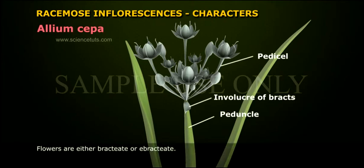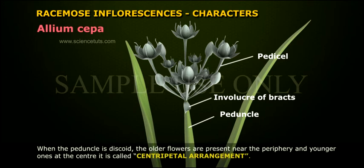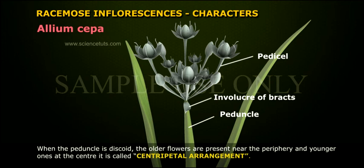Flowers are either bracteate or ebracteate. When the peduncle is discoid, the older flowers are present near the periphery and younger ones at the centre. This is called Centripetal Arrangement.